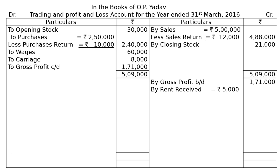Rent received is given on the credit side of the trial balance. After writing rent received Rs. 5,000, go to adjustment number 2: rent of Rs. 1,200 has been received in advance. We received Rs. 5,000, and out of this Rs. 1,200 is advance. This is a liability on our part because we are receiving income in advance. It will be deducted from the rent received account and shown in current liabilities on the liability side of the balance sheet — less rent received in advance Rs. 1,200 — showing Rs. 3,800 in the final column.